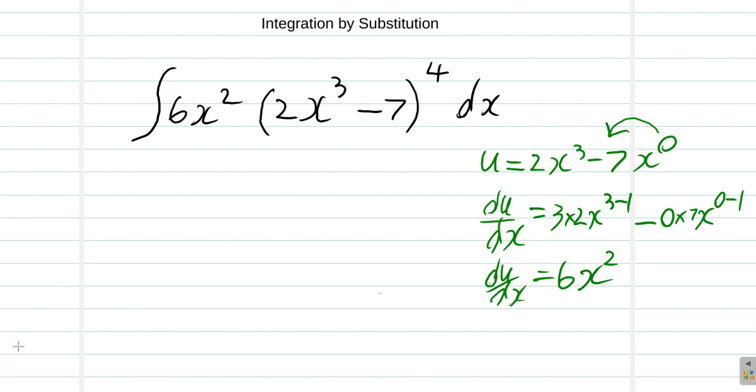So where you have here, the integral of 6x squared times, remember I did say u equals this. U equals the 2x cube minus 7. So you have times u to the 4. However, you see, dx.